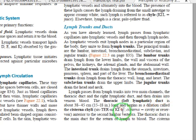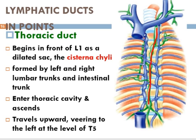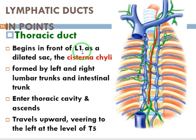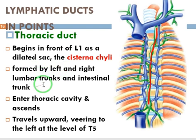The thoracic duct starts from the cisterna chyli — a reservoir or sac-like structure at the lumbar L1 vertebra level. Lymph drains into this sac and then travels up through the thoracic duct. The thoracic duct is formed by the joining of the left and right lumbar trunks and the intestinal trunk.